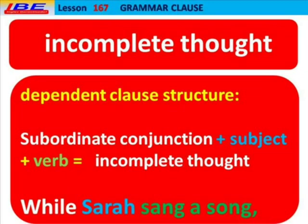"While Sarah sang a song" is not a complete thought — it is an incomplete thought. So dependent clauses have a subordinate conjunction plus the subject plus a verb, and the thought is incomplete.